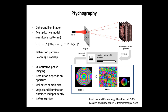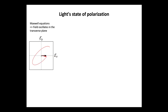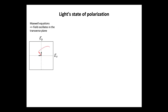That brings me to the point where I will speak about the polarization of light. To understand what polarization is, you need to remember that when you solve the Maxwell equations, you get a wave due to a field that oscillates in the transverse plane. This is a picture of an oscillating field — a wave propagating perpendicular to the display. The general solution is the red arrow corresponding to the electric field, oscillating at a given frequency and describing a nice ellipse.